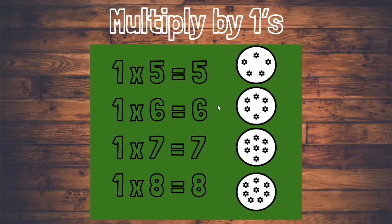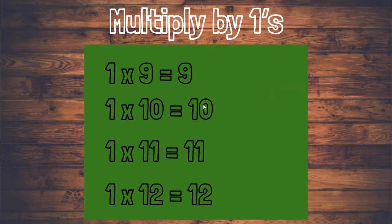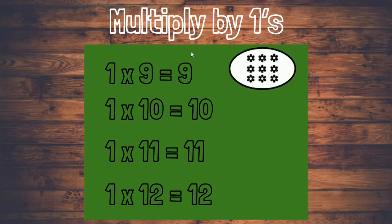One times eight means one group with eight flowers inside of the group. We know one times eight equals eight. One times nine means one group of nine. We have one group with nine flowers inside, and we know the product is nine.